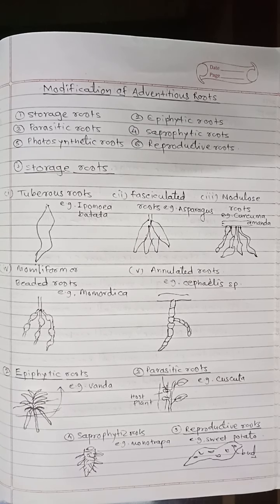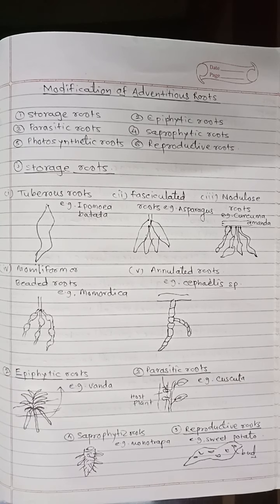Next is nodular roots. These roots become swollen at the tip due to accumulation of food material. These roots are found in Curcuma amada.